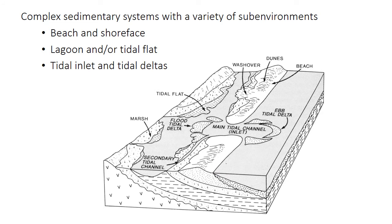A barrier island complex is a complicated mosaic of sub-environments. It includes typical beach and shore face settings. There's a lagoon or a tidal flat behind the island, and tidal inlets and flood tidal and ebb tidal deltas cutting through the barrier island. I'll focus mostly on the tidal inlet and tidal deltas in this video, because the beach environment and the tidal environment should already be pretty familiar to you.